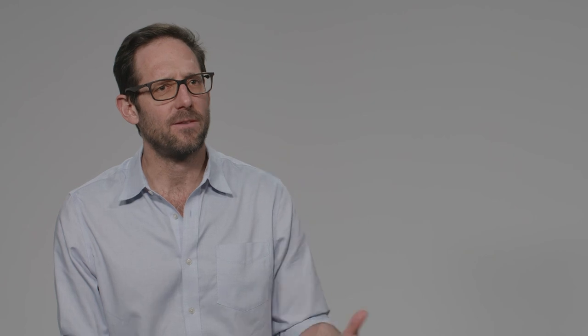Some of the project outcomes we identified: drains and pumps are effective. We produced a number of fact sheets that illustrated some of the other key outcomes of that project — four fact sheets designed to translate some of the complex analysis into information that the farmers would find interesting and be able to use. We produced a report that would hopefully have impact on some of the policy around this challenge. And then we held a number of producer workshops designed to actually interact with the farmers.